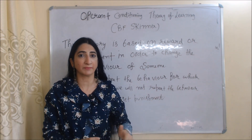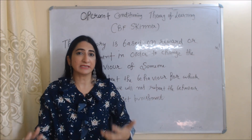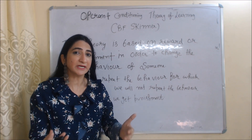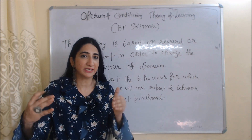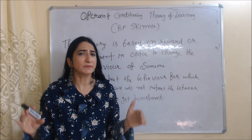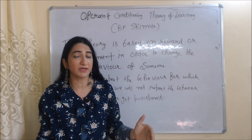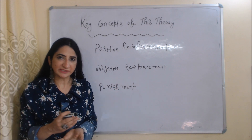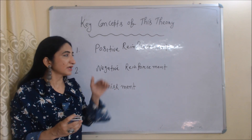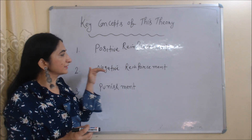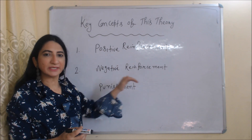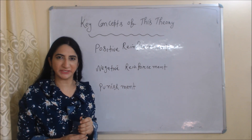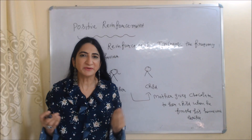According to this theory, we will repeat the behavior for which we get a reward, and we will not repeat the behavior for which we get punishment. The key concepts of this theory are positive reinforcement, negative reinforcement, and punishment. We will discuss each one by one.